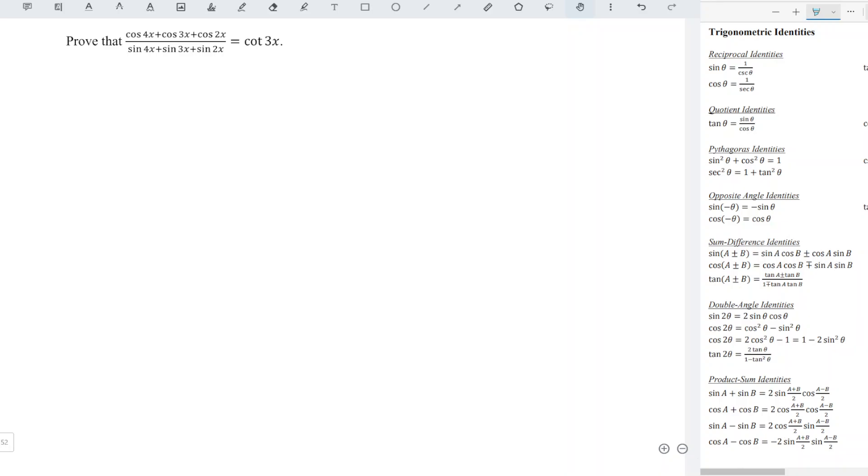For this awesome today I'd like to share how to prove this trigonometric identity. I will first rewrite the left hand side. So I will group cos 4x and cos 2x and the remaining part 3x over sine 4x plus sine 2x and the remaining part sine 3x.